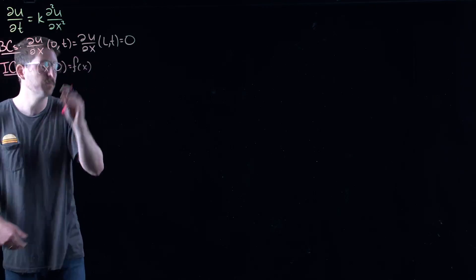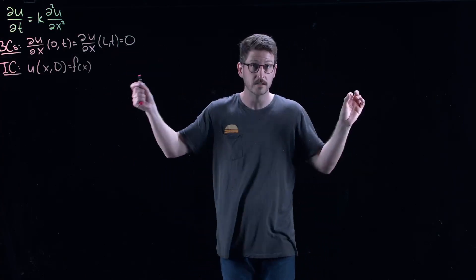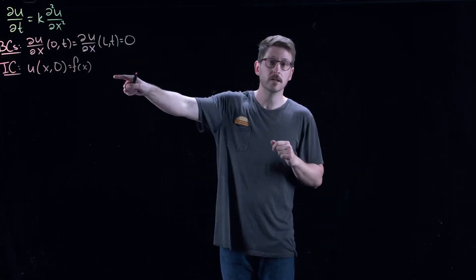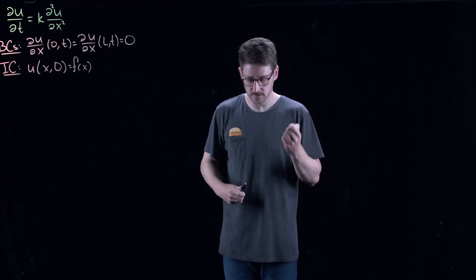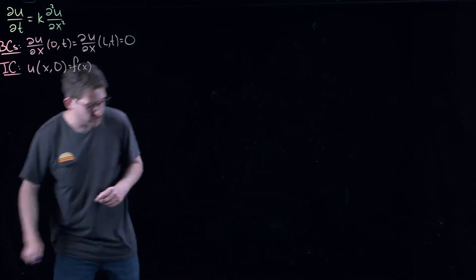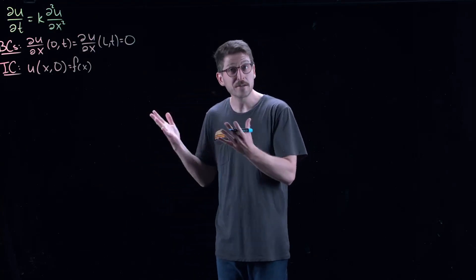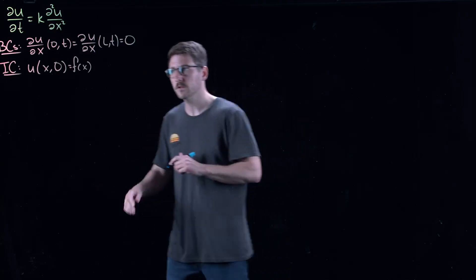And again, initial condition, well I'm just going to call it F for now. Now we saw in the previous video with Dirichlet boundary conditions, where the value of the temperature is fixed at zero, that the initial condition comes from a sine expansion. So the question is, what happens here? Is it sine expansion again? Well, I'll ruin the surprise a little bit. It's actually a cosine expansion. So let's actually work through it a little bit.